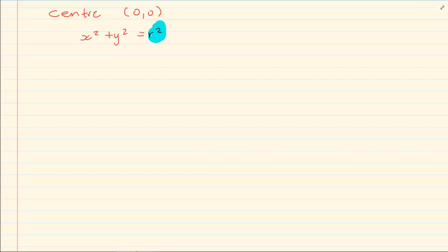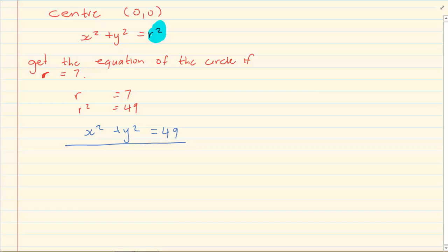So they can ask you the equation in two ways. They can tell you get the equation of the circle if r is equal to 7. Now in the equation you need r squared. So if you are given r, all you have to do is say if r is equal to 7, then r squared is equal to 49. Therefore, the equation of the circle is x squared plus y squared is equal to 49. And you are done.